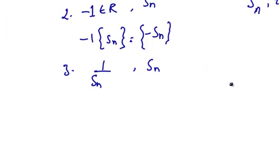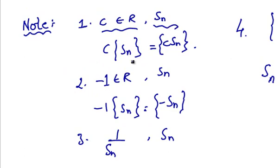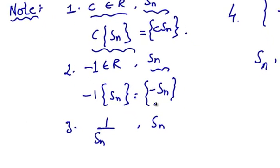Note: if C belongs to R and Sn be a sequence, then C into sequence Sn equals sequence C into Sn. And if minus 1 belongs to R, Sn is a sequence, then minus 1 into sequence Sn equals sequence of minus Sn.